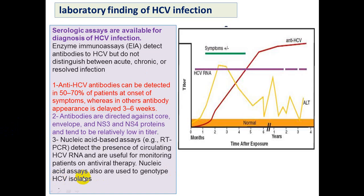Nucleic acid assays are also used to genotype hepatitis C virus isolates. Hepatitis C virus has about 1 to 7 genotypes because its RNA genome is highly mutable.